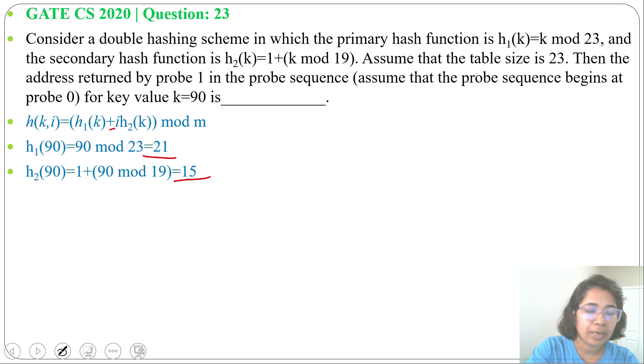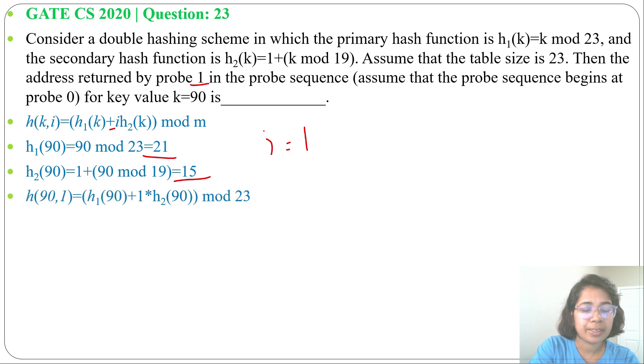Now we found h1 value and h2 value and i value is given as 1 for probe 1. So i = 1. Now find h(90,1). h(90,1) = h1(90) + 1*h2(90) mod 23. And h1(90) = 21, h2(90) = 15.